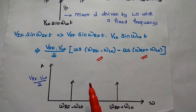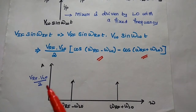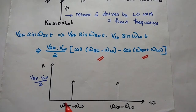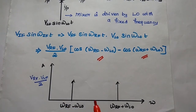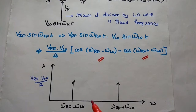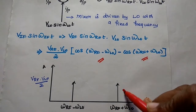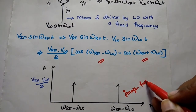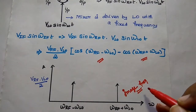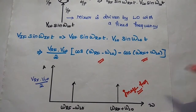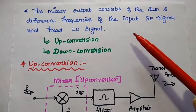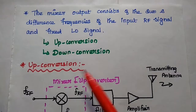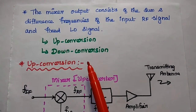We can represent the signal with this magnitude, getting one as a sum value and another as a difference value. In between, there is one more signal called the image frequency, which has to be rejected — that will be discussed later. The mixer output consists of both the sum and the difference of the input frequencies.